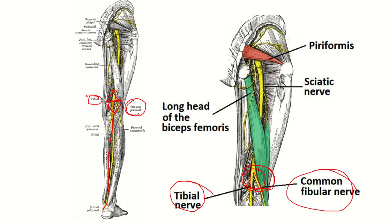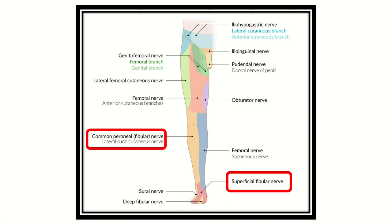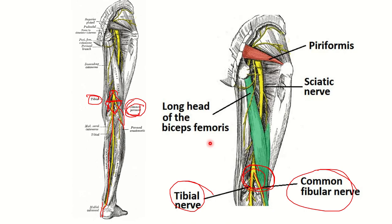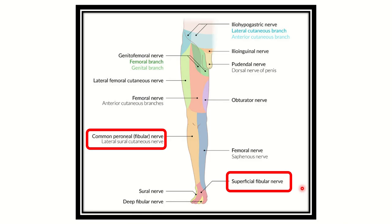The tibial nerve passes downward through the posterior aspect of the leg, then goes to the medial side and finally reaches the sole of the foot. On the other hand, the common peroneal nerve enters the anterior and lateral aspect of the leg, supplying that region.